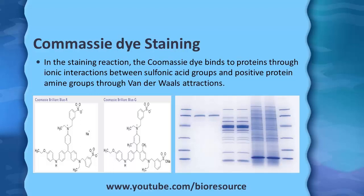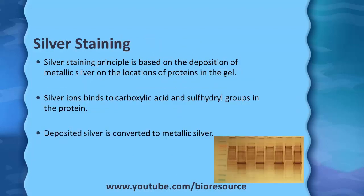The gel then needs to be de-stained to get visible protein bands. De-staining is done in an acetic acid and methanol mixture, which de-stains the gel so that the protein bands are visible as blue-colored bands. That is the principle and method of Coomassie dye-based staining.